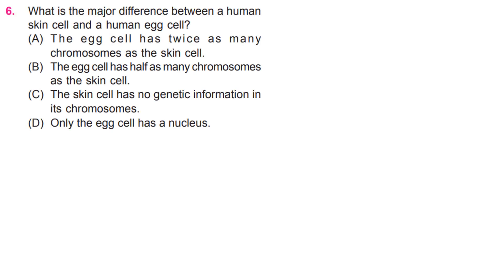What is the major difference between a human skin cell and a human egg cell? B, the egg cell has half as many chromosomes as the skin cell.